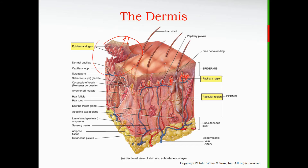The dermal papillae are finger-like projections, and on one side of the diagram the epidermis has been pulled away to show how the dermal papillae extend upward and interlock — like Velcro or puzzle pieces — with extensions of the epidermis. Everything above those projections is the papillary region, and everything below down to the next boundary is the reticular region.